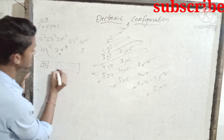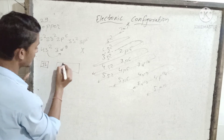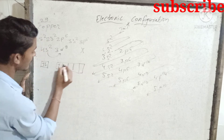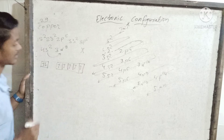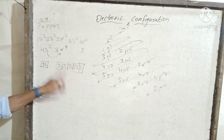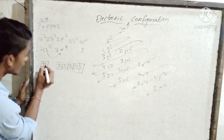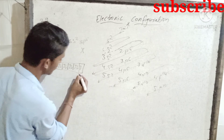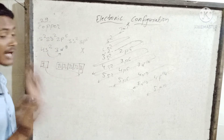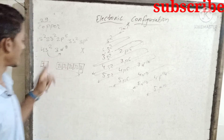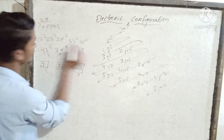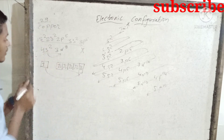In the exceptional cases, the electron jumps to fulfill either the half-filled or fully-filled orbital. A fully-filled or half-filled orbital is more stable. That is why these exceptional configurations exist.